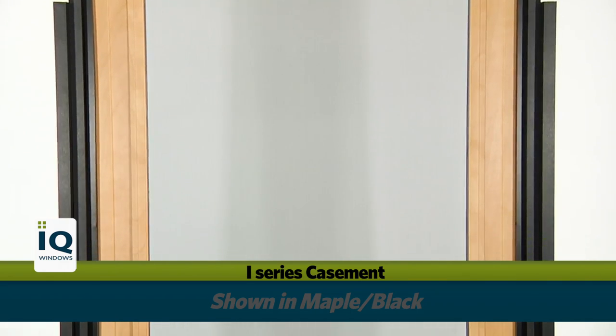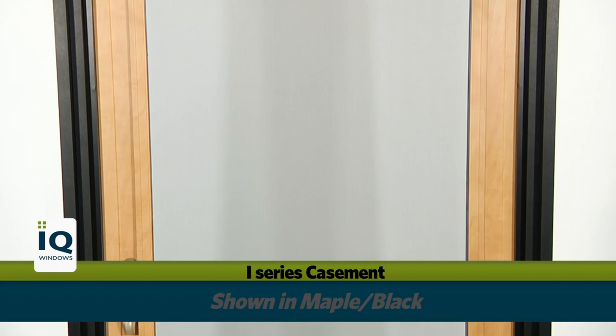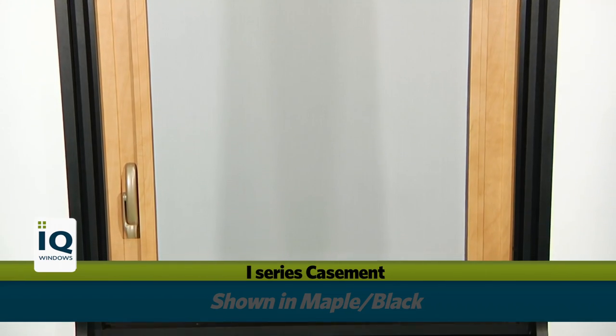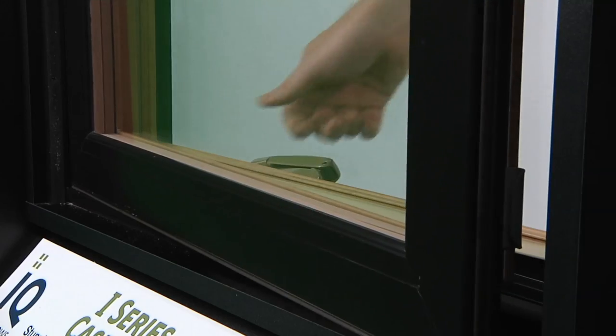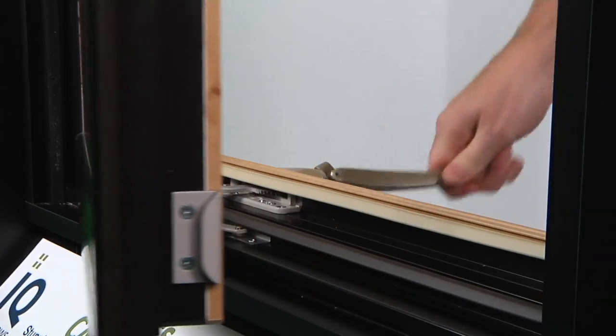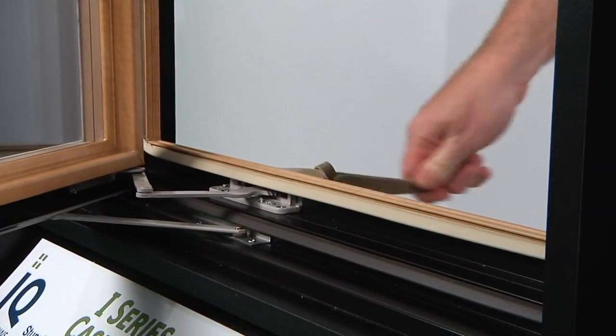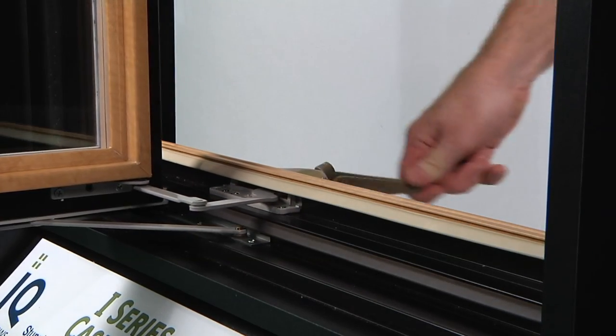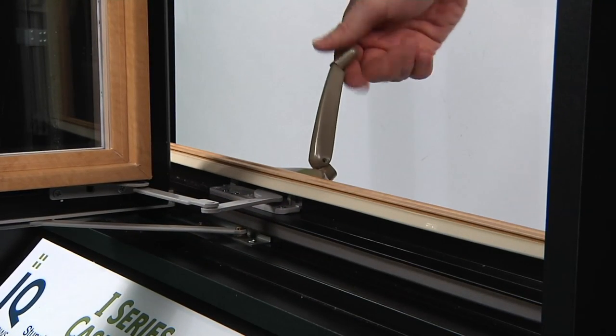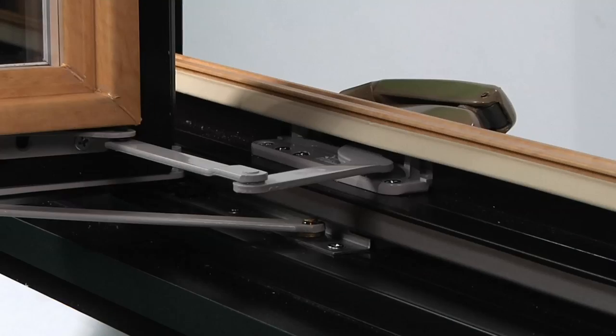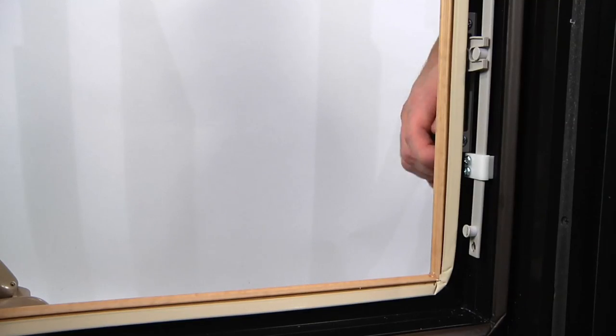The casement window shares the majority of the features of the other i-Series windows from IQ, but naturally they operate differently by using a crank-out design. On the i-Series casement windows, the ultra low-profile Maxim hardware system by Truth Hardware is used as a complete system where the hinges, operating crank handles, and single-action, multi-point locking system were developed to work together in concert to provide years of smooth and trouble-free operation.